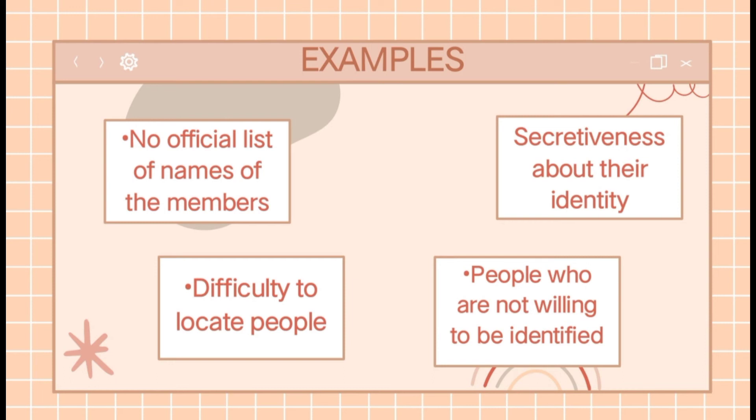These sampling techniques can be used for a population where there is no easily available data, like their demographic information — for example, homeless populations or members of an elite club whose personal details cannot be obtained easily.